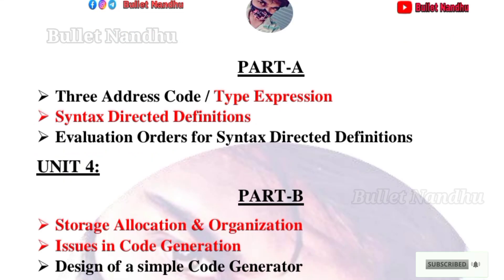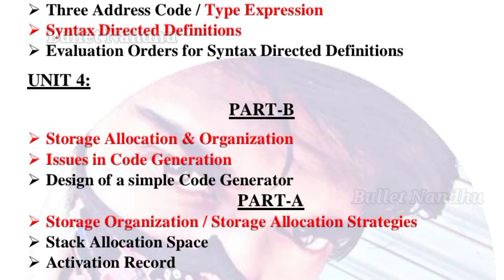Unit 4 Part B covers storage allocation and organization. Issues in code generation and design of a simple code generator are very important topics. Unit 4 Part A covers storage allocation strategies, and activation record is a very important topic.